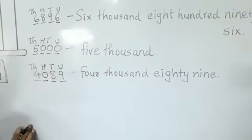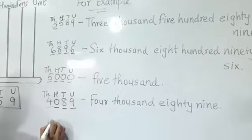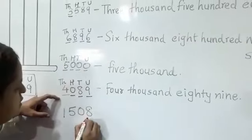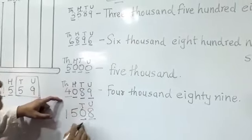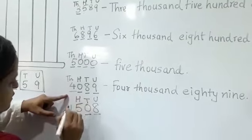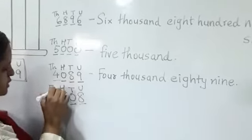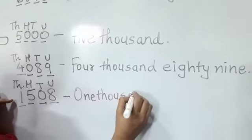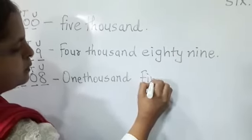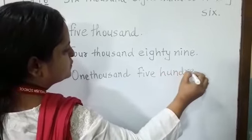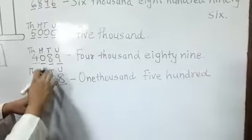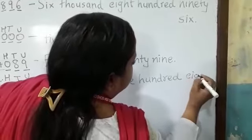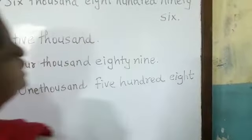One more example — 1508. The unit place is 8, the tens place is zero, the hundreds place is 5, and the thousands place is 1. We write one thousand, five hundred. Since the tens place is zero, we don't write that number. The unit place is 8, so we write eight. Wherever it is zero, you don't have to write the number — go directly forward.